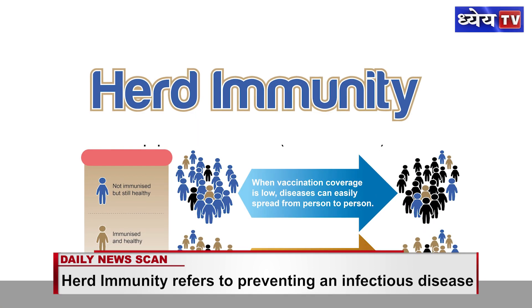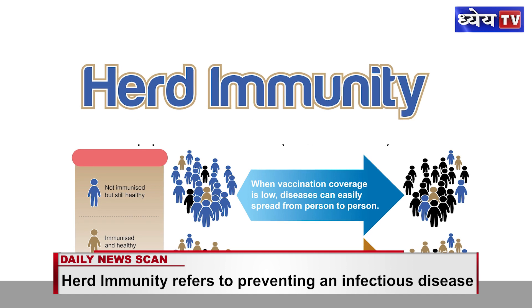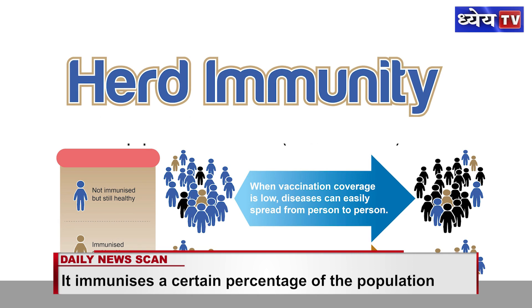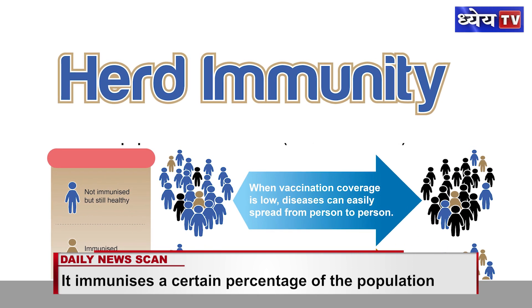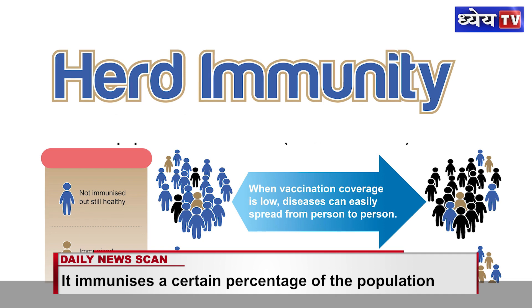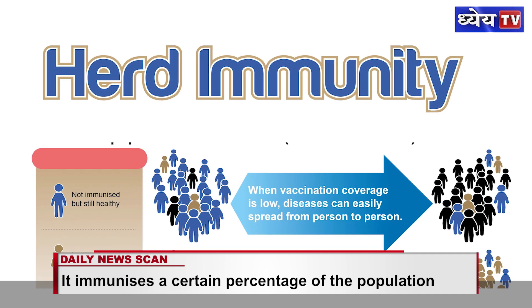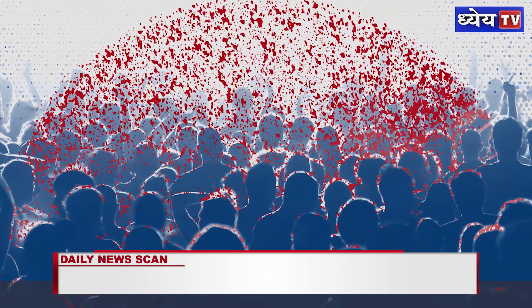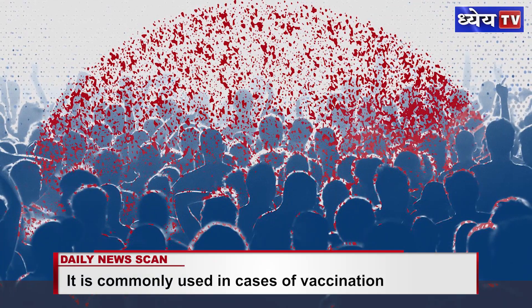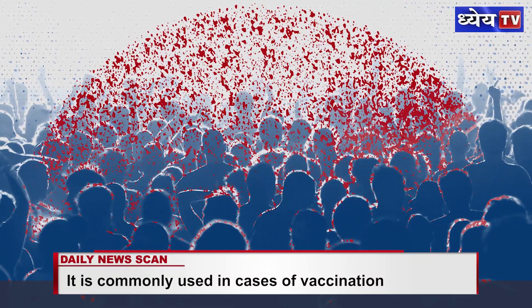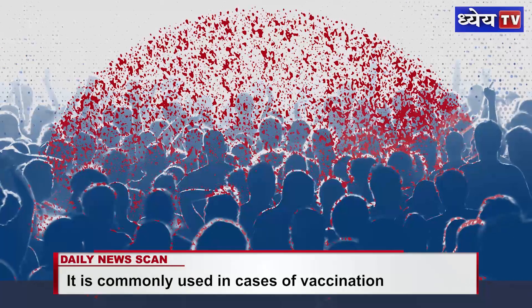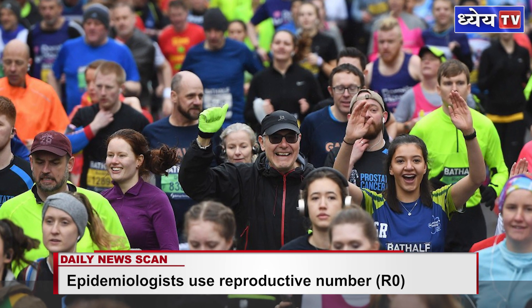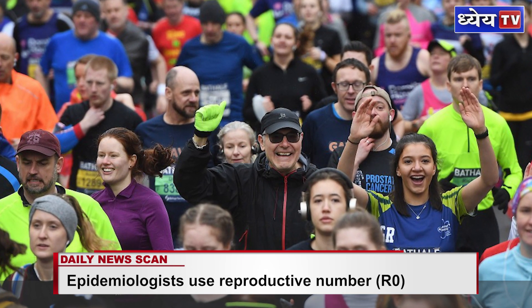Herd immunity basically refers to preventing an infectious disease from spreading by immunizing a certain percentage of the population. This concept is commonly used in cases of vaccination. The idea is that if a certain percentage of the population is immune, members of that group can no longer infect another person, breaking the chain of infection and protecting those who are most vulnerable.